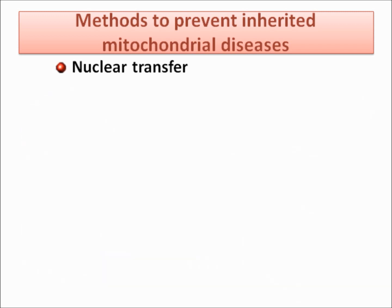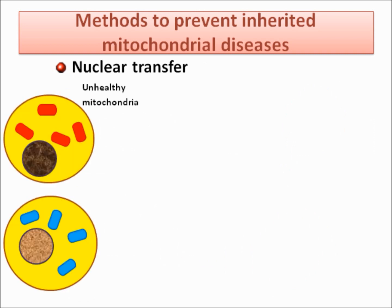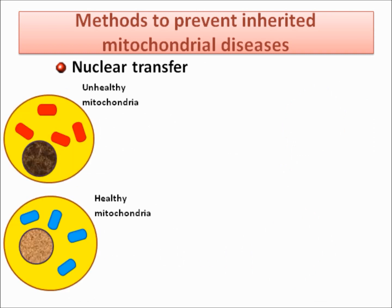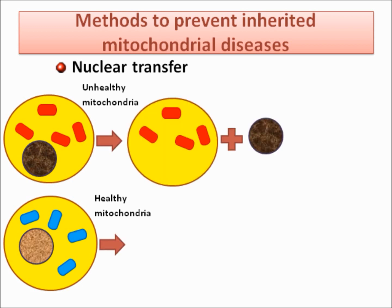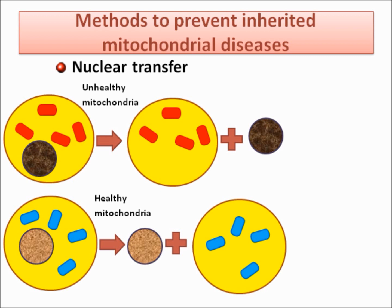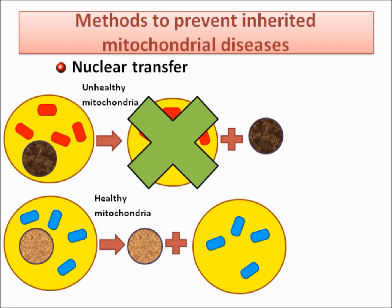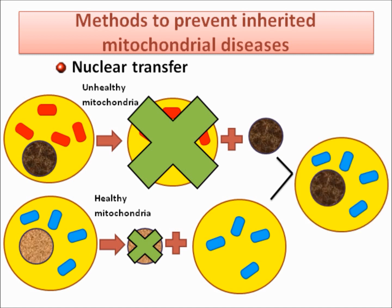Secondly, nuclear transfer. A cell with unhealthy mitochondria and a cell with healthy mitochondria are necessary. Scientists separate cytoplasm from nucleus in both of them. In the unhealthy cell, the cytoplasm is removed, and in the healthy cell, the nucleus is eliminated. Then, the cytoplasm of the healthy cell and the nucleus of the unhealthy cell are put together.